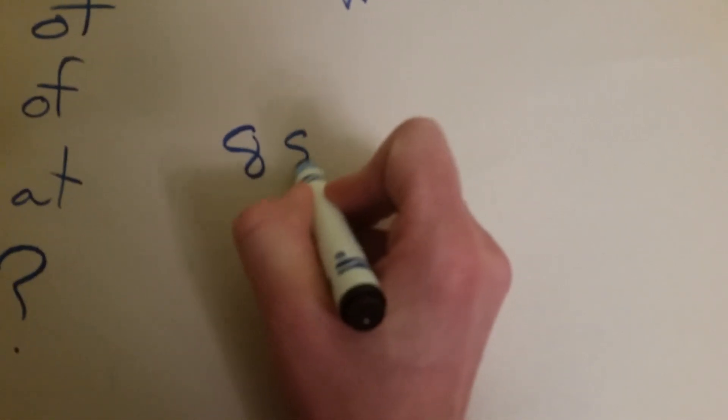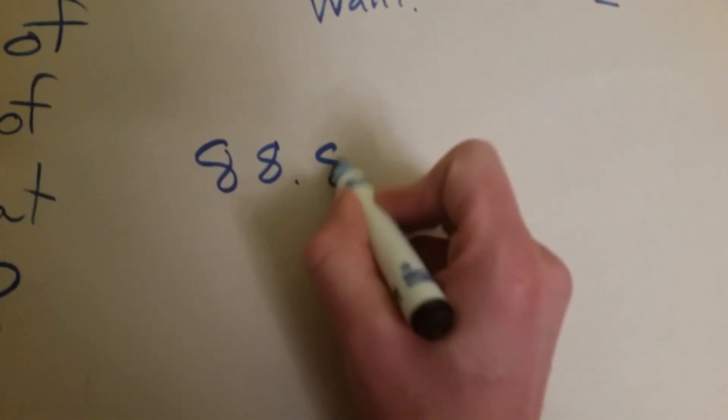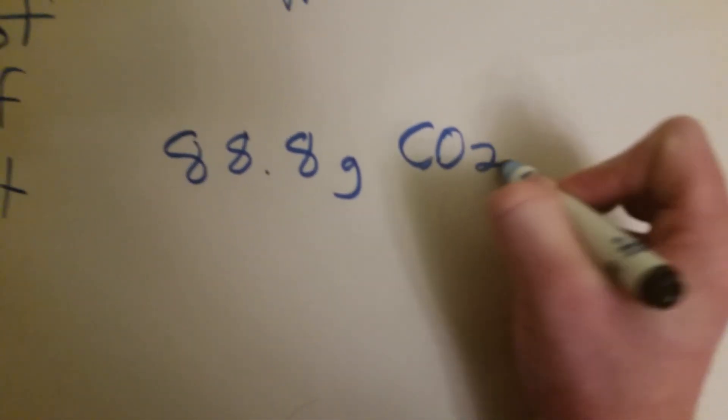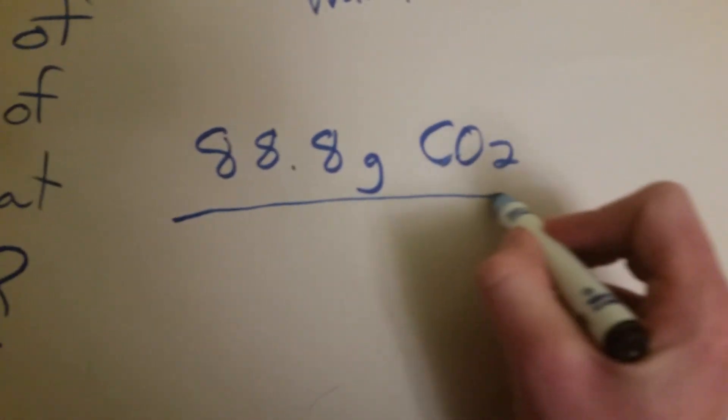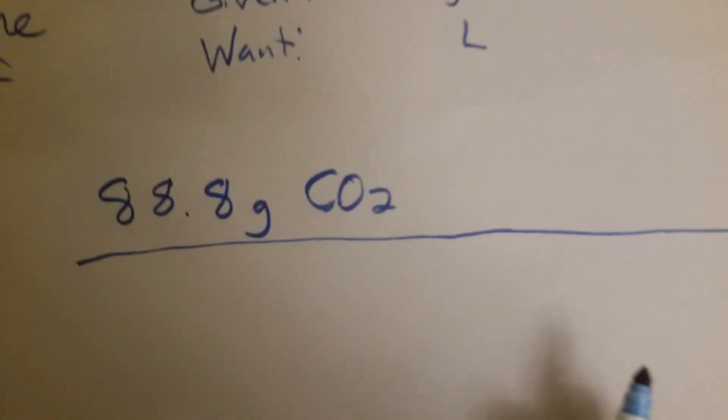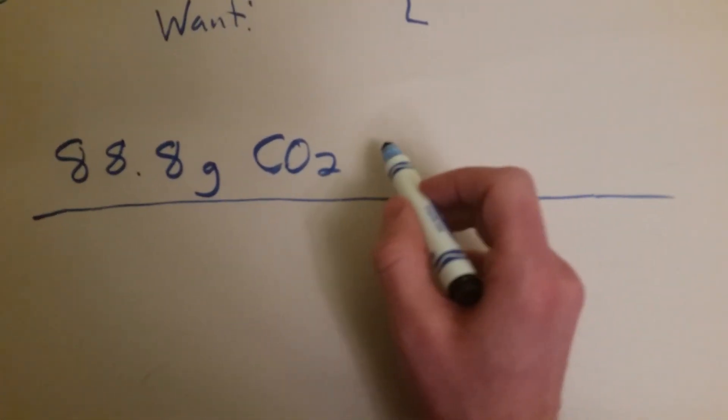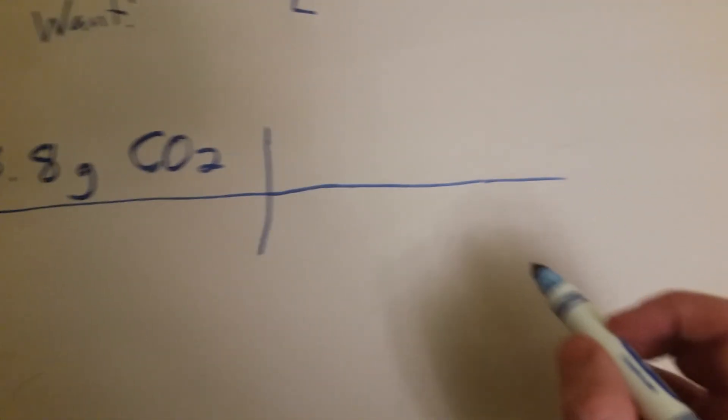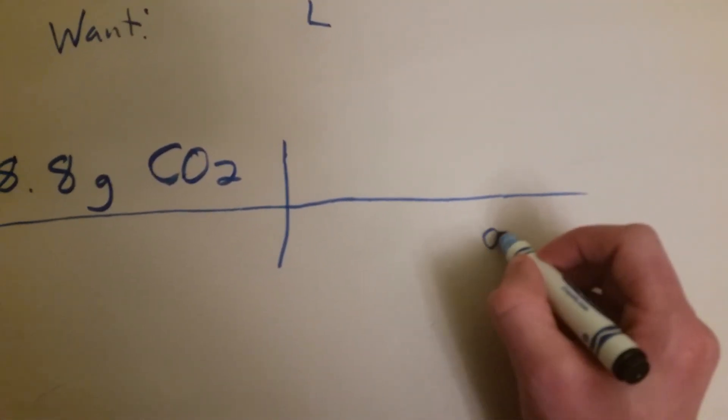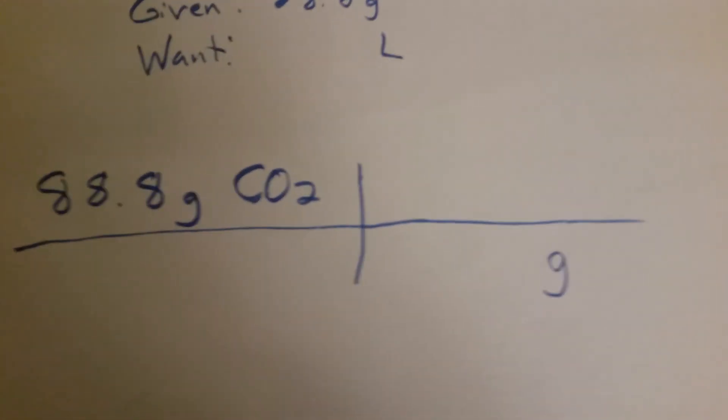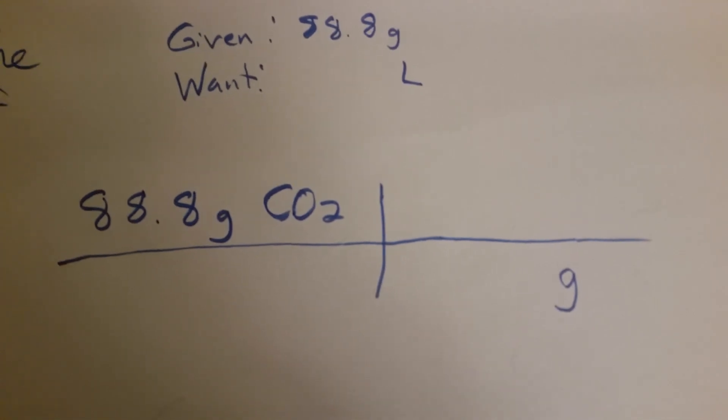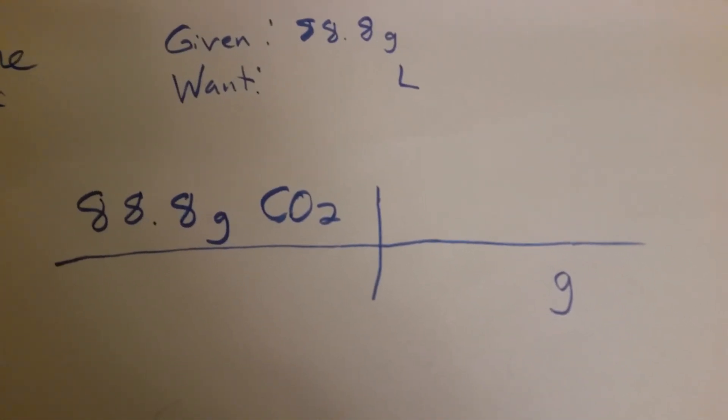Let's start out with 88.8 grams of CO2. Let's draw our little line here. Let's use conversion tables. We've got grams here. So I guess that probably means we need grams here. And also, can we go directly from mass into liters? You know what? No. We can't.